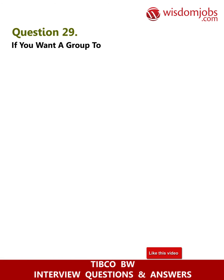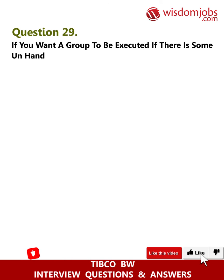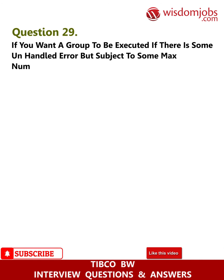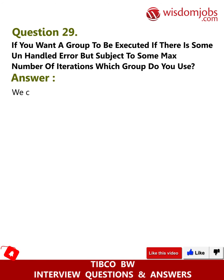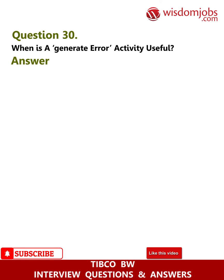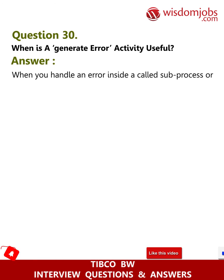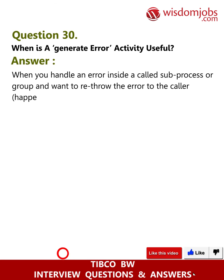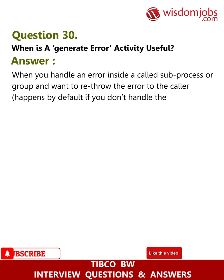Question 29: If you want a group to be executed when there is an unhandled error but subject to some maximum number of iterations, which group do you use? Answer: We can use Repeat On Error Until True. Question 30: When is a Generate Error activity useful? Answer: When you handle an error inside a called sub-process or group and want to re-throw the error to the caller. This happens by default if you don't handle the error in the called process.